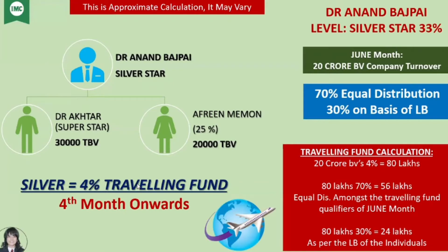The company turnover was 20 crores. What will the company do first? You will get 4% out of the fund. Why? Because the traveling fund is 4%. So with a 20 crore turnover, the company will set aside 4% under the name of the traveling fund. 4% of 20 crores is 80,000,000 rupees. The company has already established this amount.